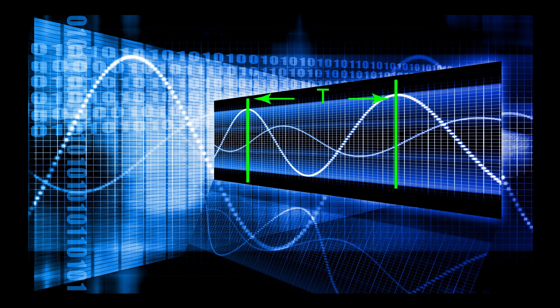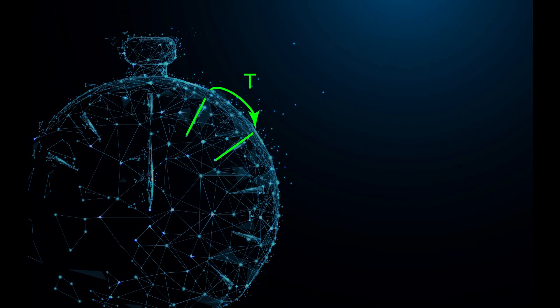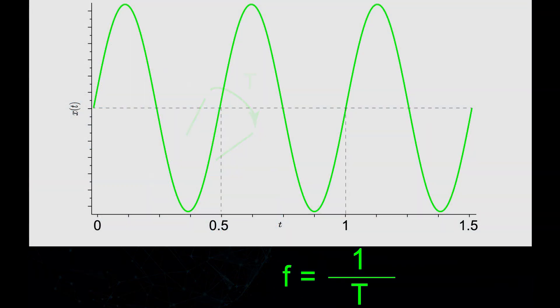The period can be any measure of time, such as a second, an hour, or a day. The rate at which this repetition occurs is called frequency, F. Frequency is the inverse of the period. The number of cycles per second gives frequency in the units of hertz.